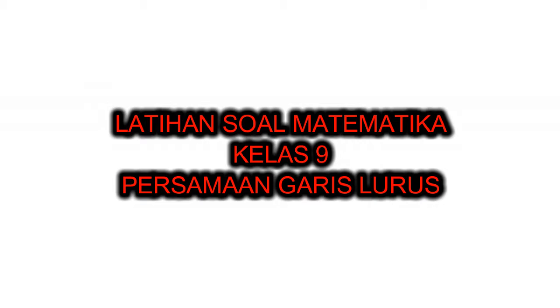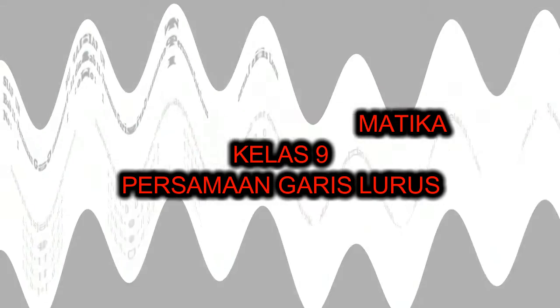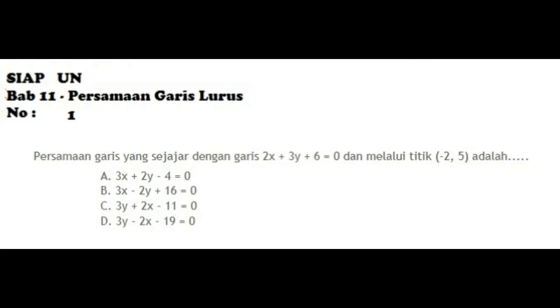Thank you for joining us. Chapter 11: Persamaan Garis Lurus (Linear Equations). Problem 1: Find the equation of a line parallel to 2x + 3y + 6 = 0 that passes through point (-2, 5).